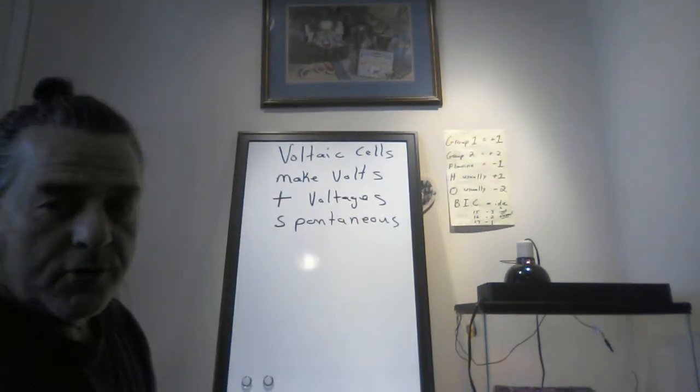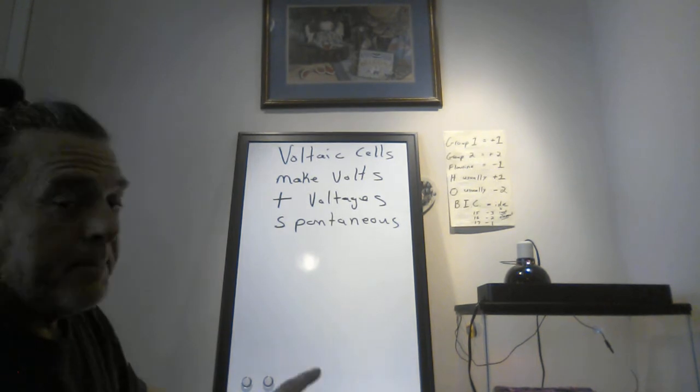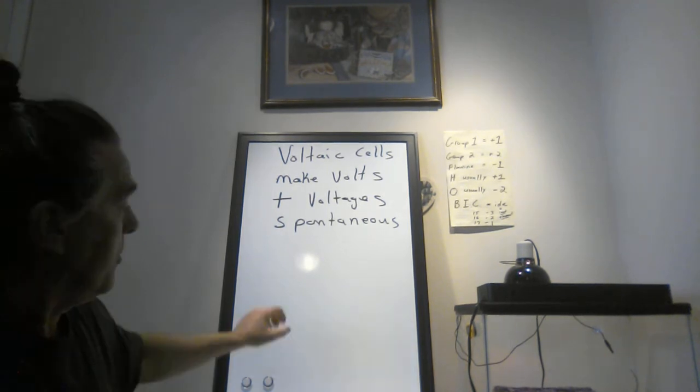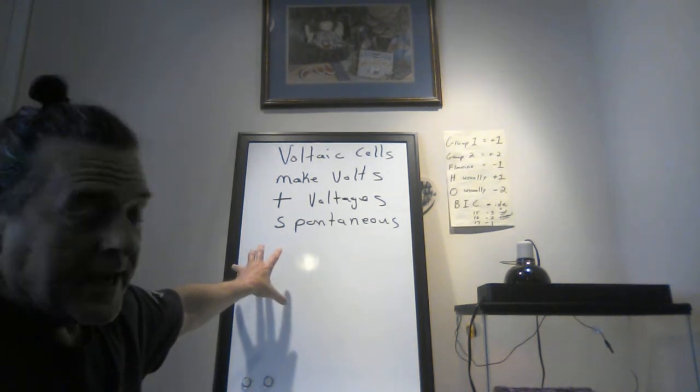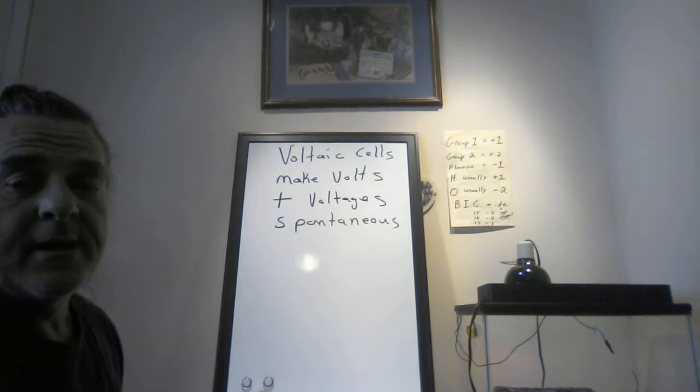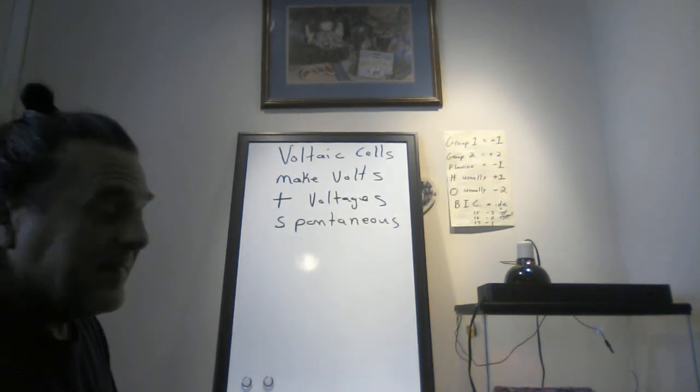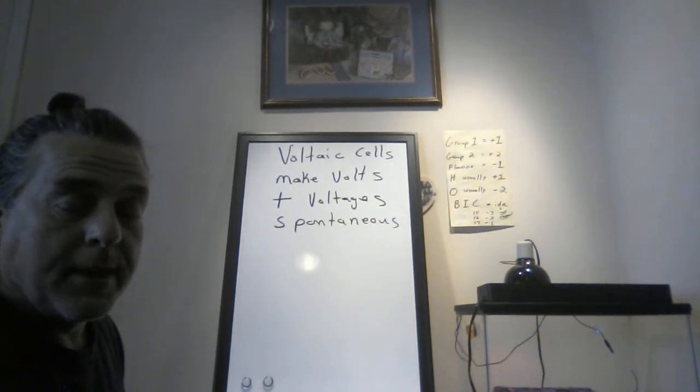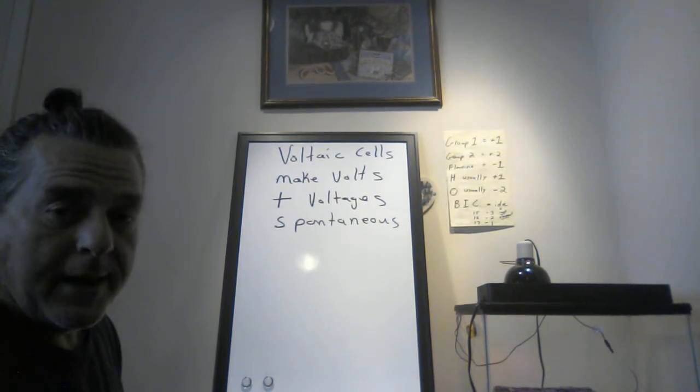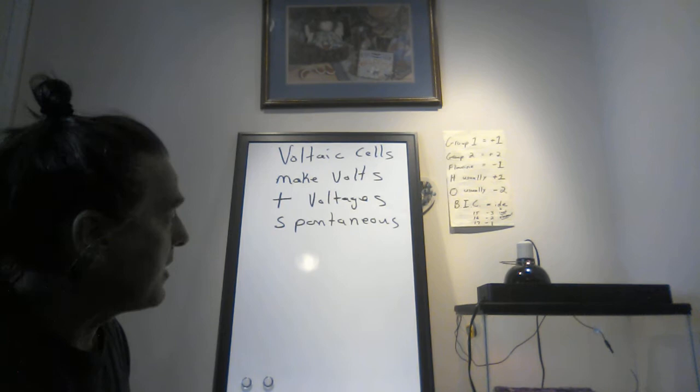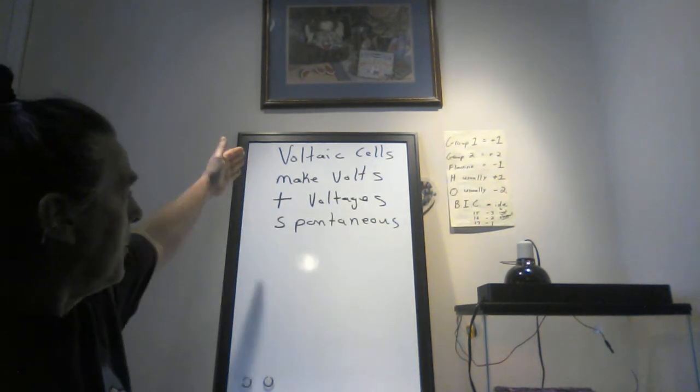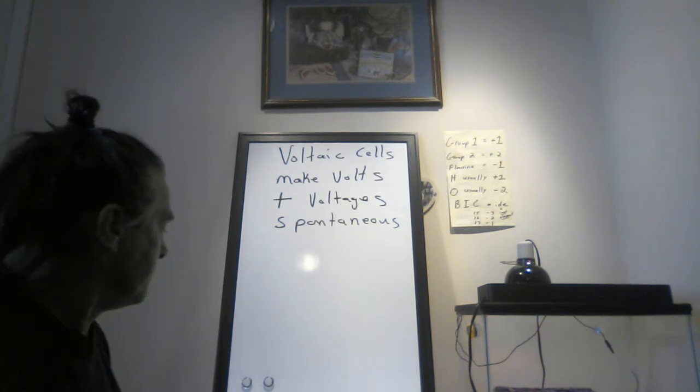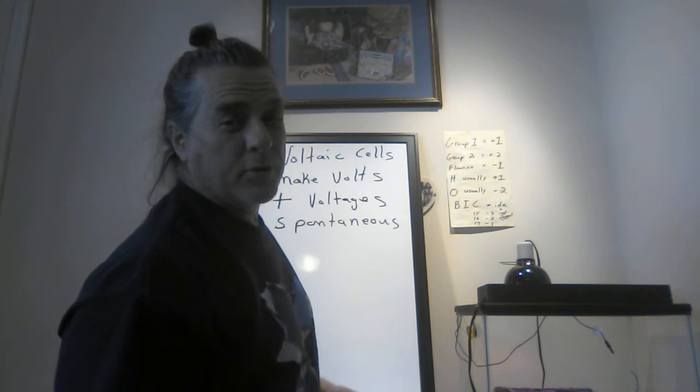Anode and cathode is still going to take place. And I'm going to write down a couple of phrases that, if you remember, makes it easier to answer some of the questions on this. I'm going to erase all of this now and we're going to call these voltaic cells. These make volts. These have positive voltages and are spontaneous.